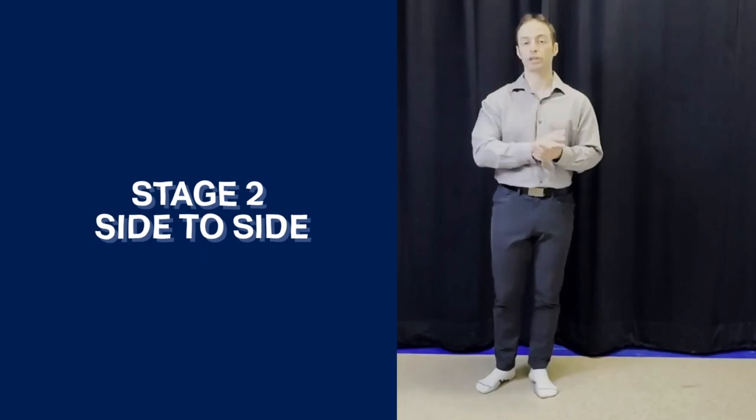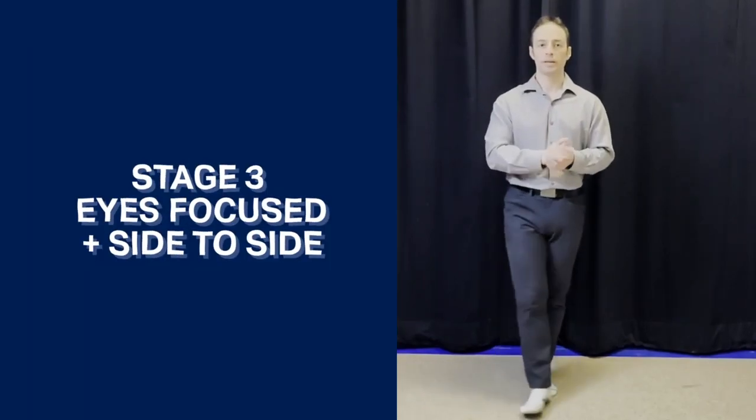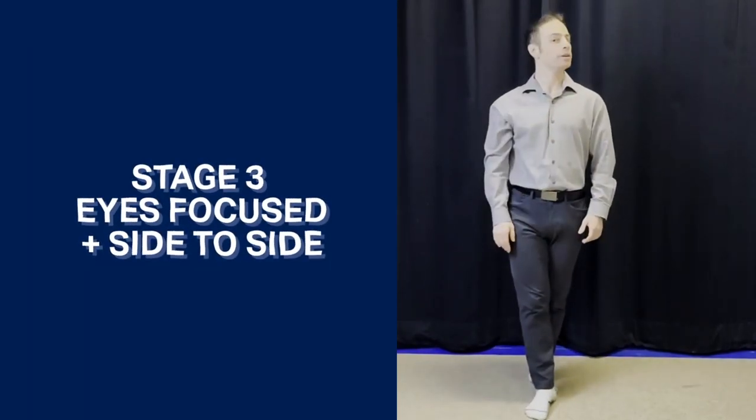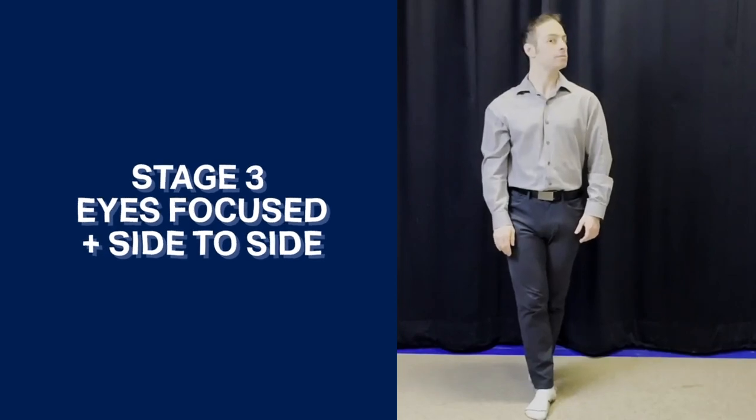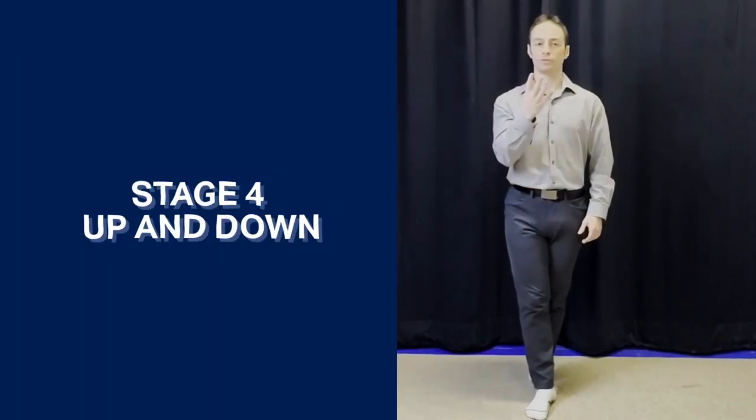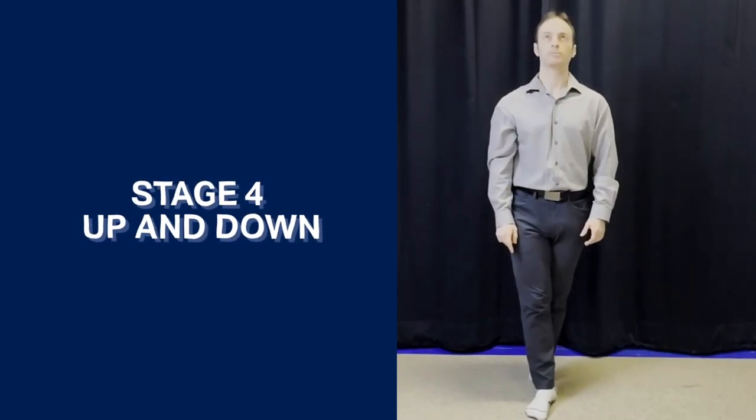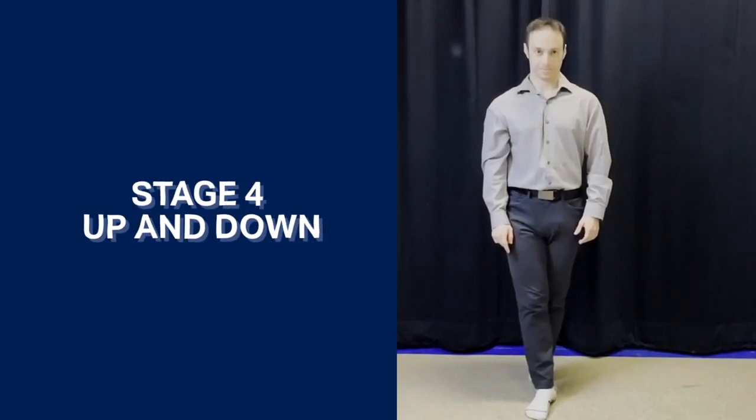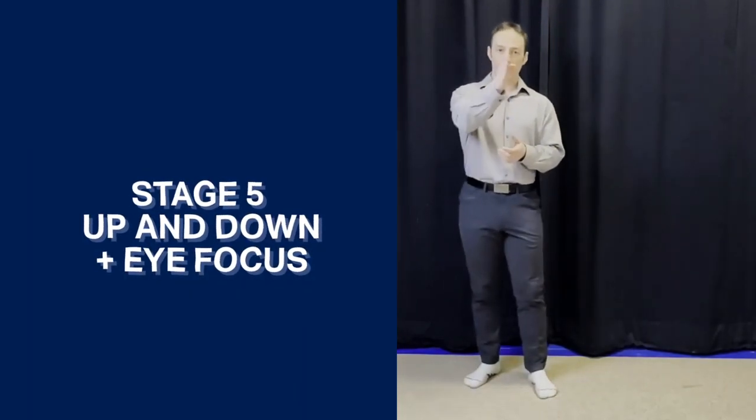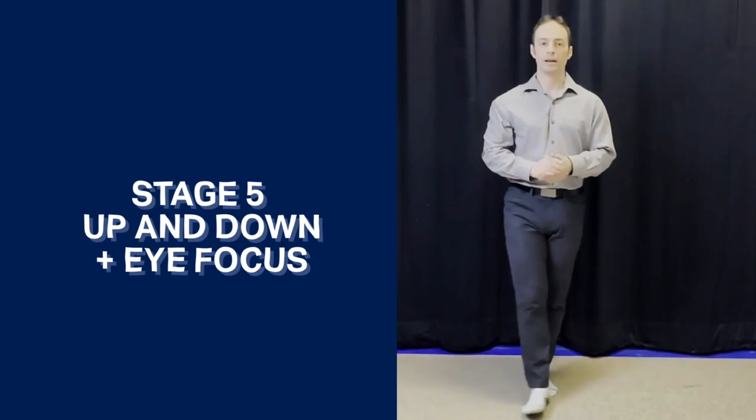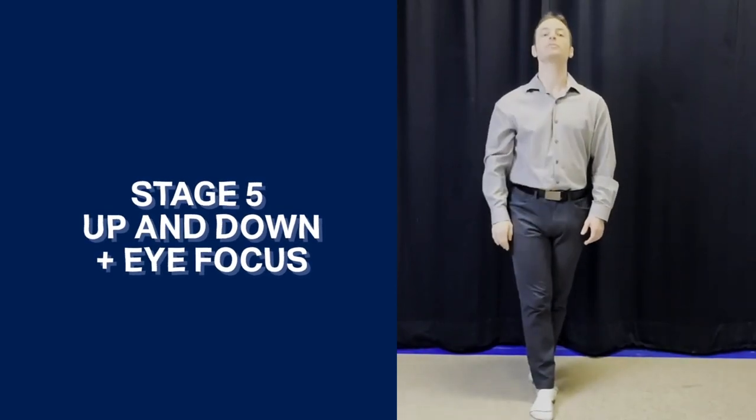That's variation two, progression two. Progression three is your eyes are focused forward and your head is moving like the Mona Lisa, like so. Progression four, instead of going side to side, you're going up and down. Progression five, we're going to keep our eyes focused and move the head up and down like this. Eyes are here and then moving up and down.